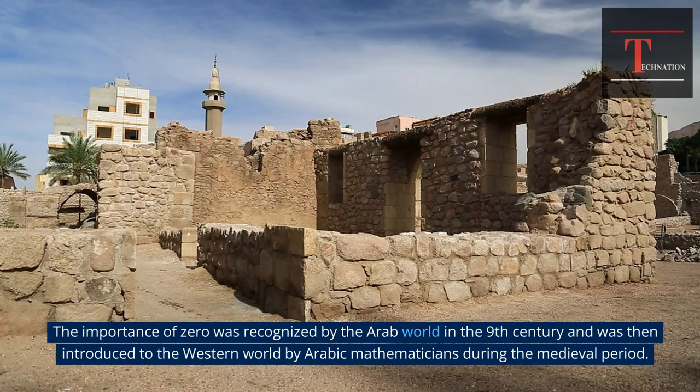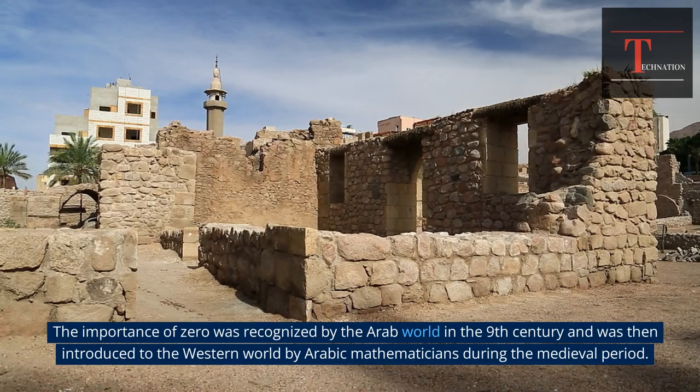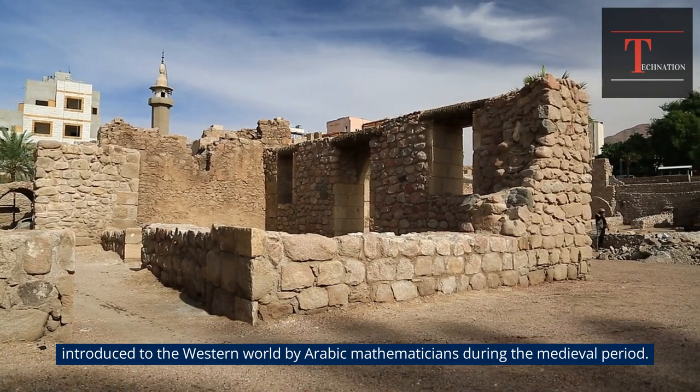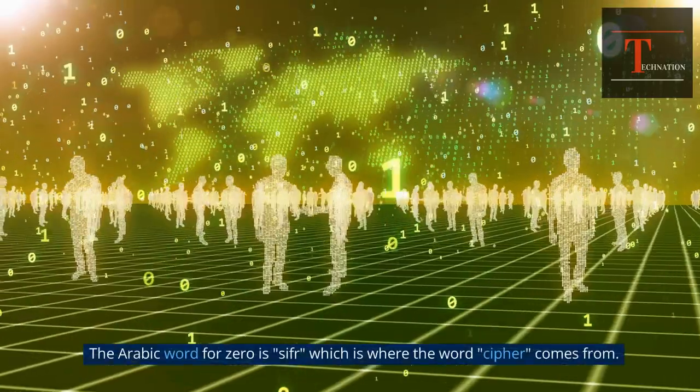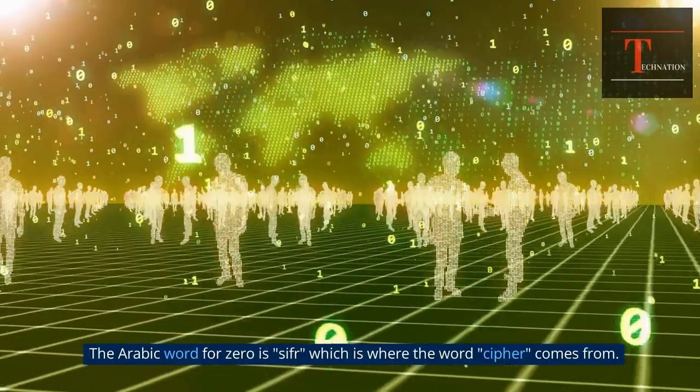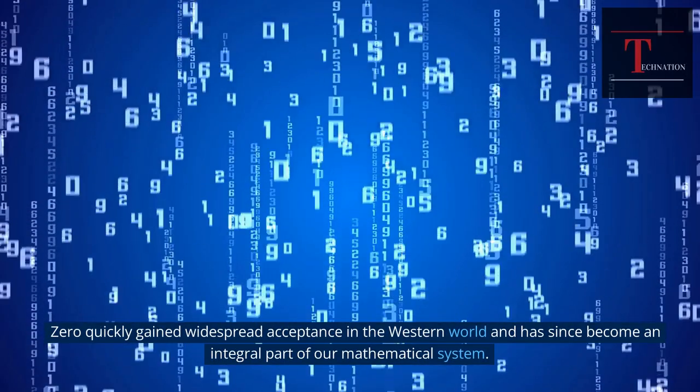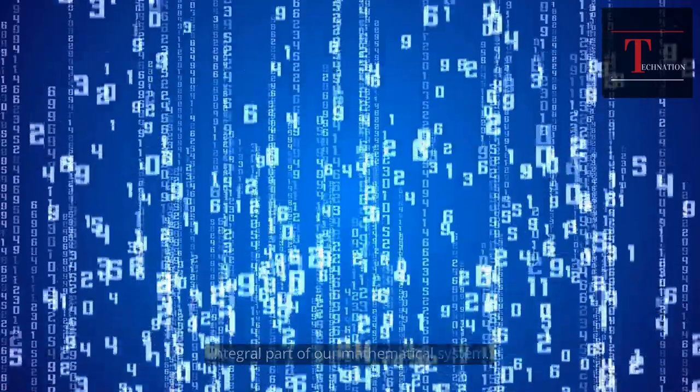The importance of zero was recognized by the Arab world in the 9th century and was then introduced to the Western world by Arabic mathematicians during the medieval period. The Arabic word for zero is cipher, which is where the word cipher comes from. Zero quickly gained widespread acceptance in the Western world and has since become an integral part of our mathematical system.